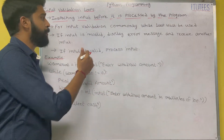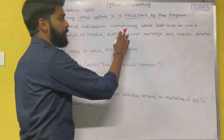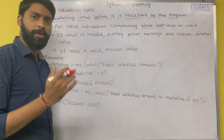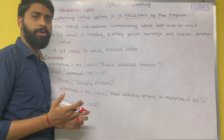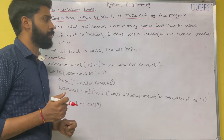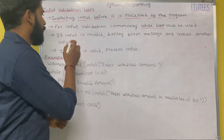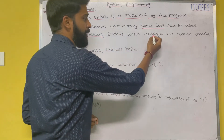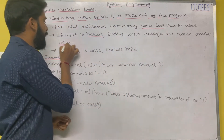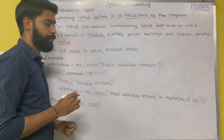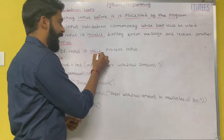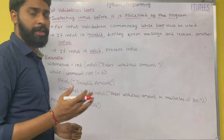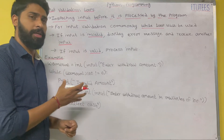So for input validation, commonly a while loop will be used. By using a while loop you are going to validate the input. If the input is invalid, display an error message and receive another input. If the input is valid, process the input.